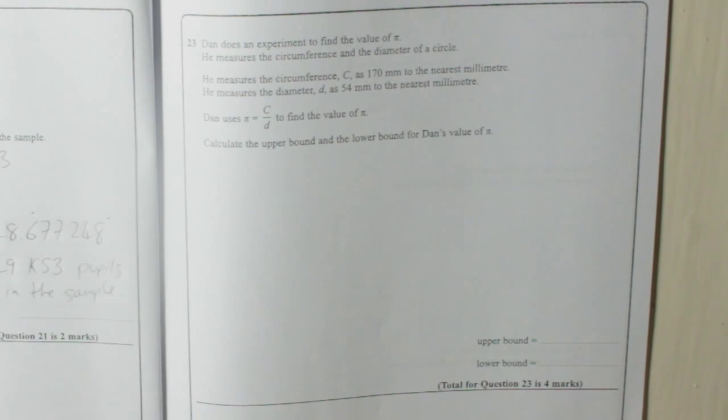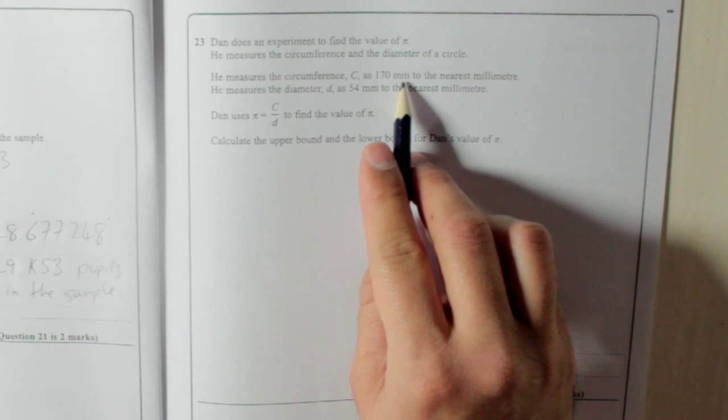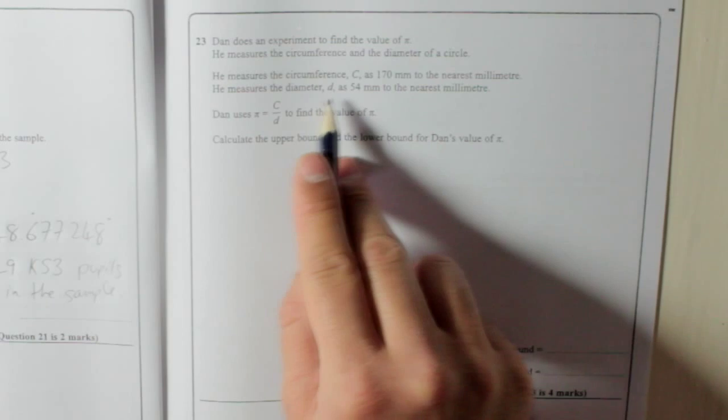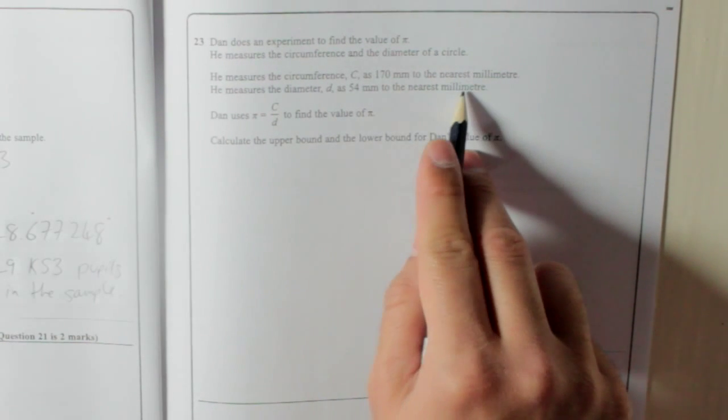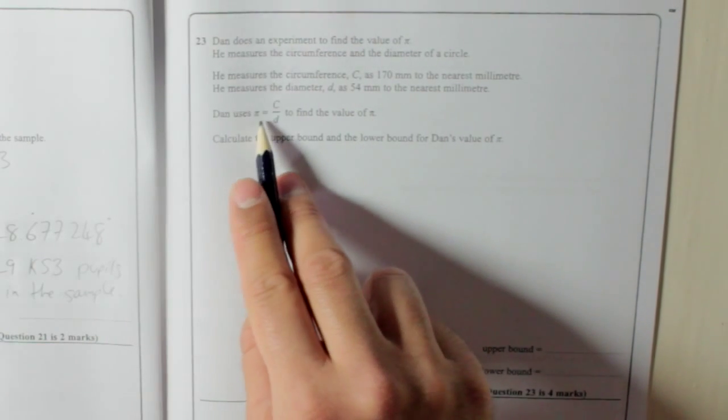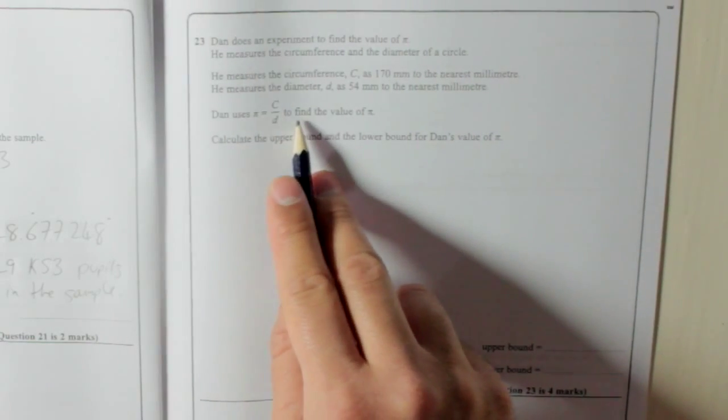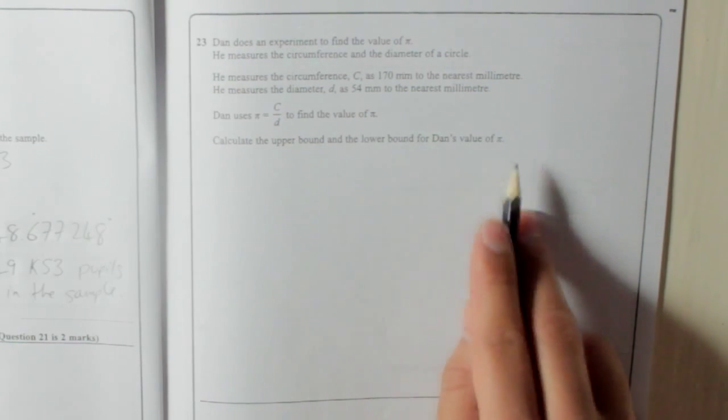Question 23. Dan does an experiment to find the value of pi. He measures the circumference and the diameter of a circle. He measures the circumference C as 170 millimeters to the nearest millimeter. He measures the diameter D as 54 millimeters to the nearest millimeter. Dan uses pi equals C over D, circumference divided by diameter, to find the value of pi. Calculate the upper bound and the lower bound for Dan's value of pi.